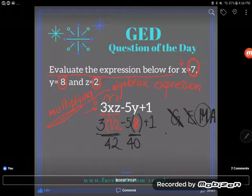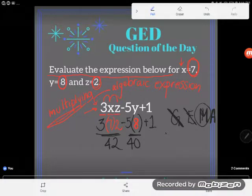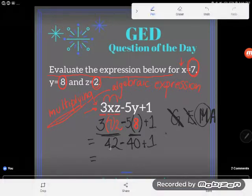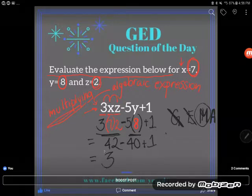So 3 times 7 is 21, 21 times 2 is 42, 5 times 8 is 40. And now you need to drop down whatever you haven't used up. So I haven't used this minus here, so I'll drop the minus. And I haven't used the plus one, so I'll drop the plus one. And now all I have left to do is my addition subtraction. So 42 minus 40 is of course 2, and if I added 1 to that, I'd get 3. The correct answer is 3.